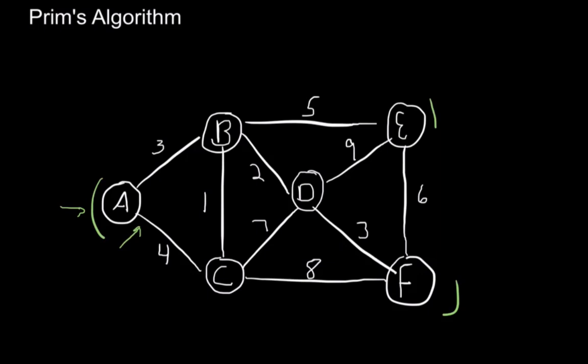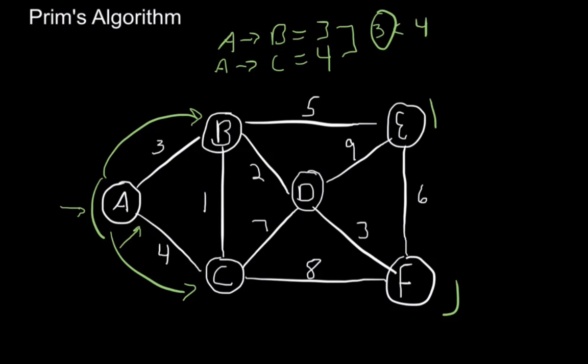The very first thing we're going to do is look at A and see what edges it has connected to what nodes. We can see right here that A is connected to B, and the value of A to B has a weight of three. Then we have another option, A to C, and A to C has a weight of four. All we have to do is compare these two. We see that three is less than four.